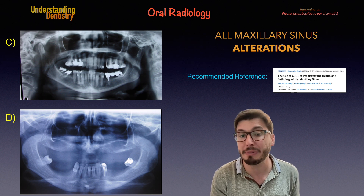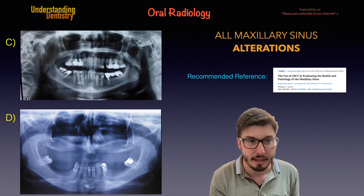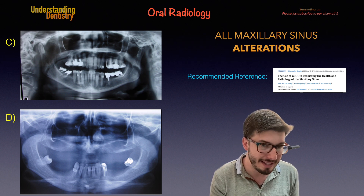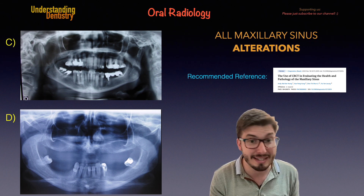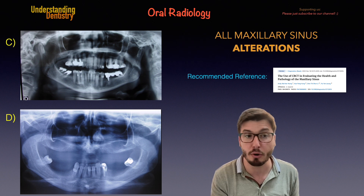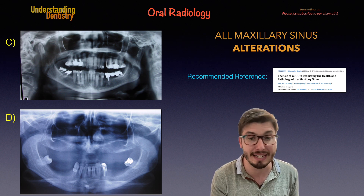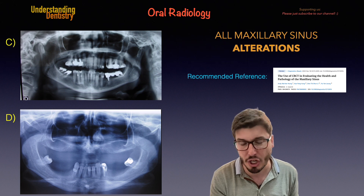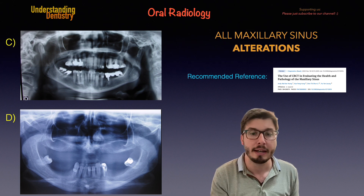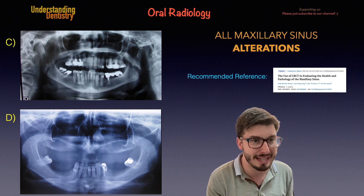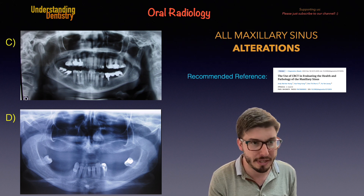Septa is the plural, septum is the singular. So we have a bone septum here. This is a sinus variation, so it can be present or not. We see this in a 2D image, like this OPG, with a W-shape — the W-shape showing us that there is a bone septum there.